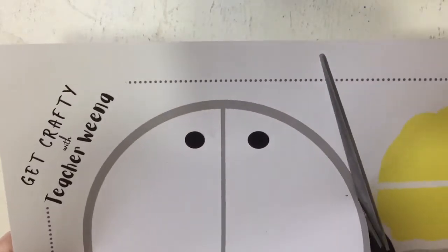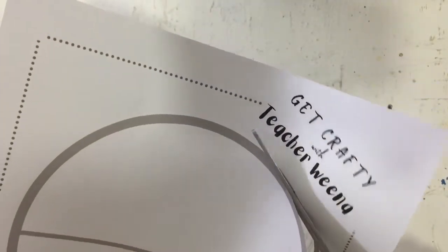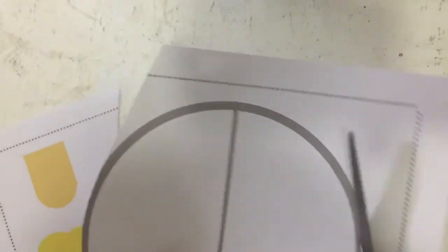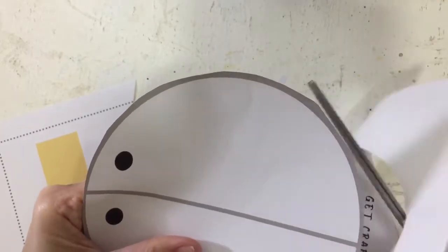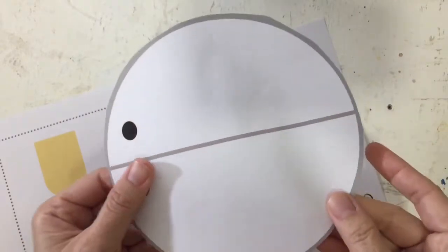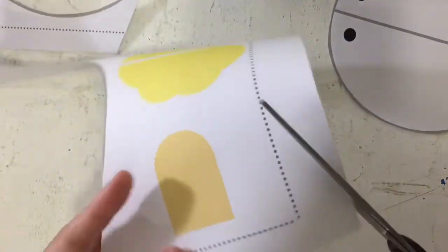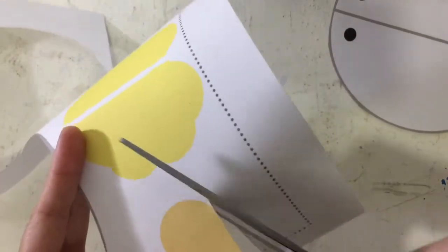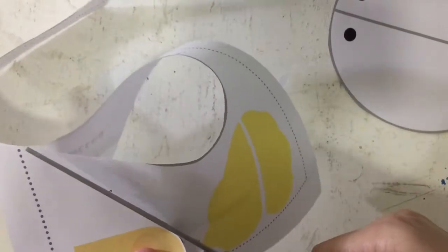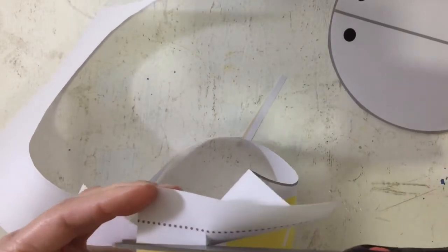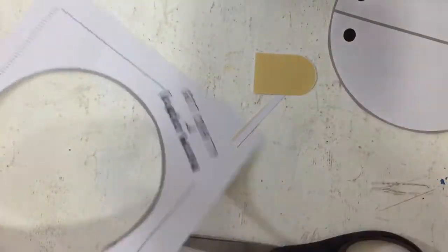Let's cut the body of the duck. Now let's cut the bill. Next are the wings.